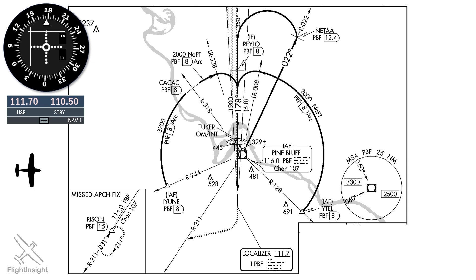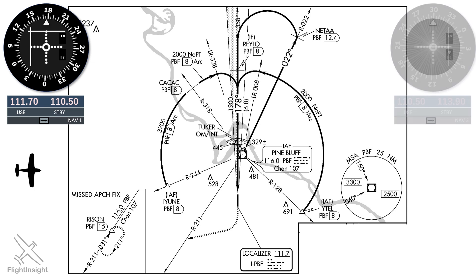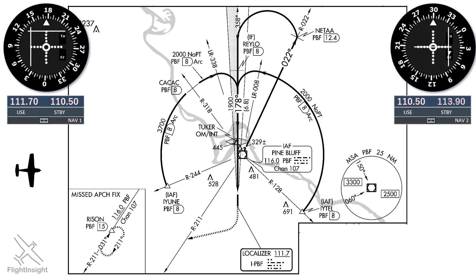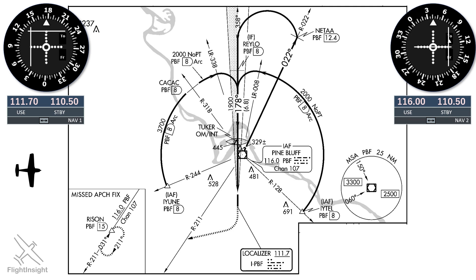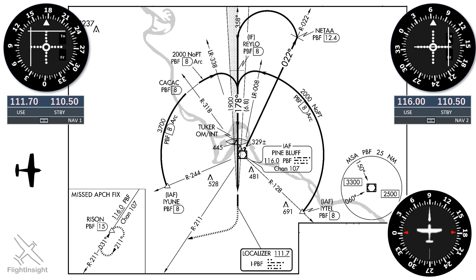The guidance doesn't depend on what OBS setting we have like it would for a VOR — it's only designed to follow the 178 course to the runway. Over on NAV2, we could set the Pine Bluff VOR, 116.0, and flip it active. We'll need this to navigate along the arc from IUNE. That fix is along the 244 radial. We'll be intercepting that radial and flying it inbound towards IUNE, so let's twist the OBS and put 244 on the bottom — its reciprocal, 064, is on top. This is the course we'll fly inbound to the fix once we're on the radial. Notice the flag flip from TO to FROM as we twist. We'll need our DME tuned to the Pine Bluff VOR as well.